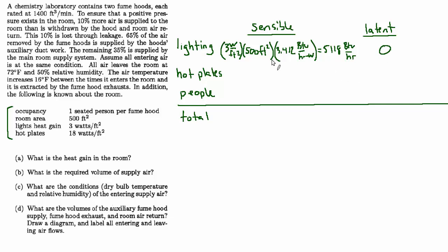And then we have the hot plates, which I was prepared to assume was completely sensible load. But I cheated and looked at the answer solution, and they're allocating two-thirds of the load to sensible and one-third to latent. I guess the assumption is that the application of a chemistry lab would be using hot plates to boil some water or do something that produces latent load in the room. So I'm going to go with their assumption.